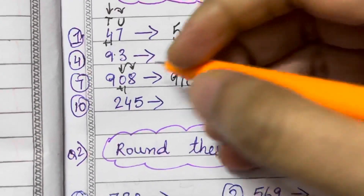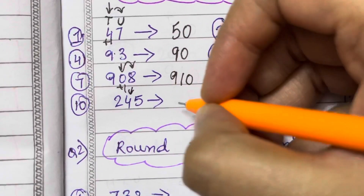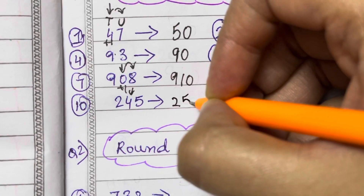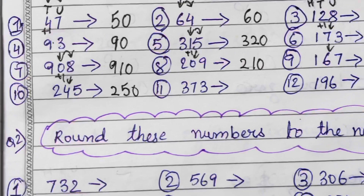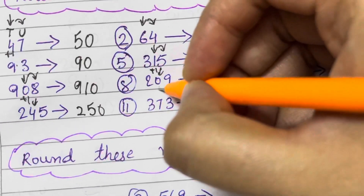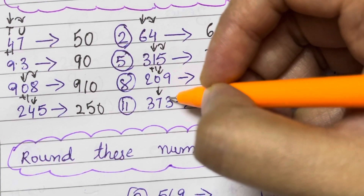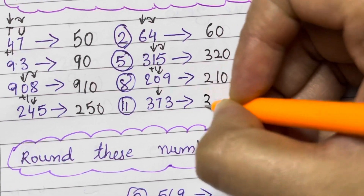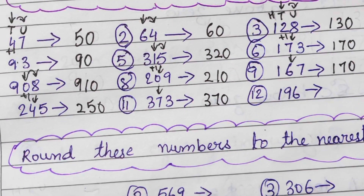245. The tens place is 4, and the digit after that is 5. So there is a plus 1 added to that, making it 5, and the 5 is replaced by 0. That is 250. Next, 373. The tens place is 7. The digit after that is less than 5, so we don't change the number — 3 and 7 remain, and we just replace 3 with 0. That is 370.